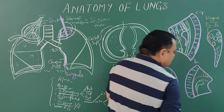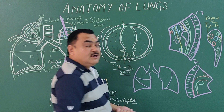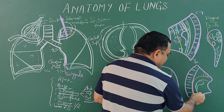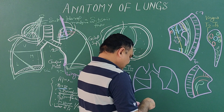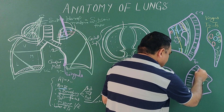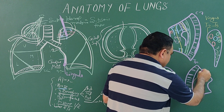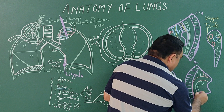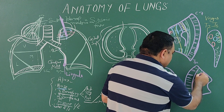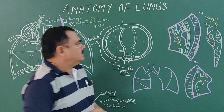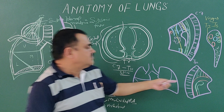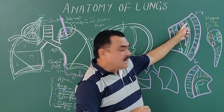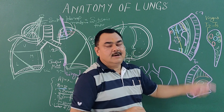Here are the common carotid and subclavian branches. This is the arch of the aorta, and here is the descending aorta. And here is another impression — this is the impression of the esophagus. The impression of the esophagus is on both lungs; you have seen it in the right lung and the left lung.